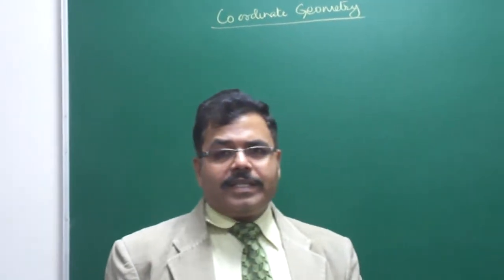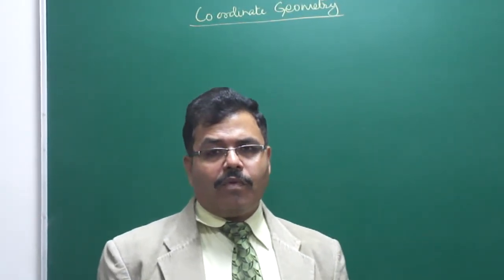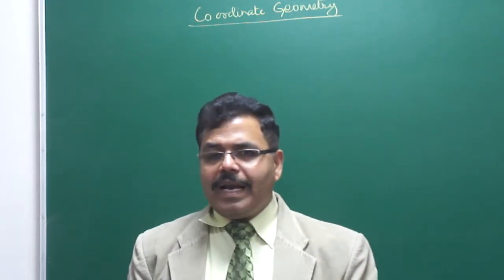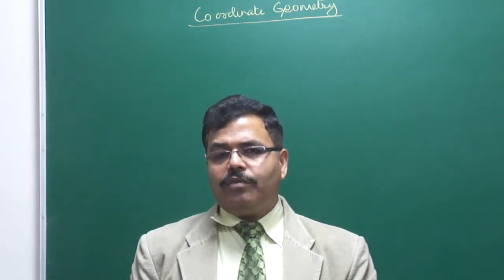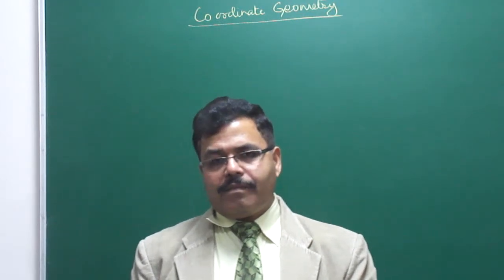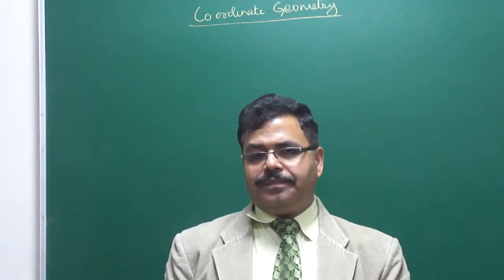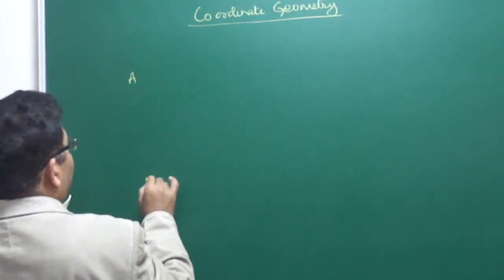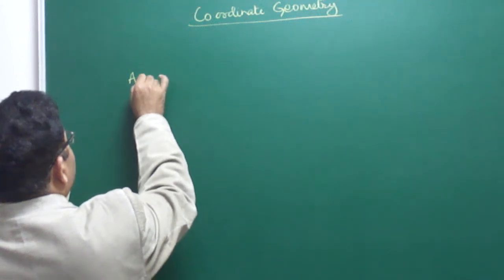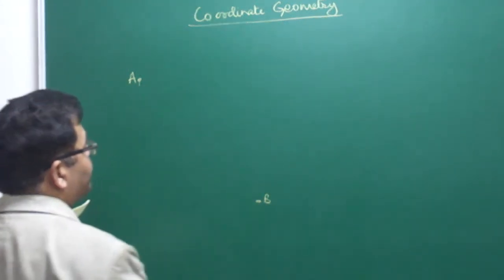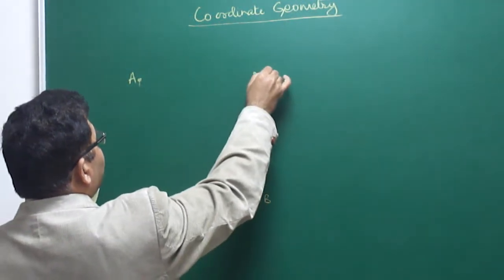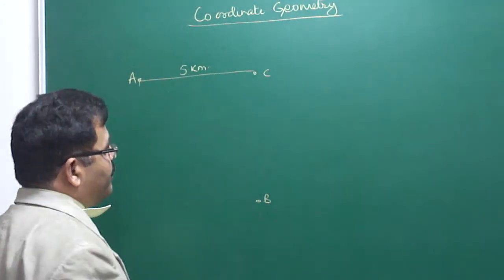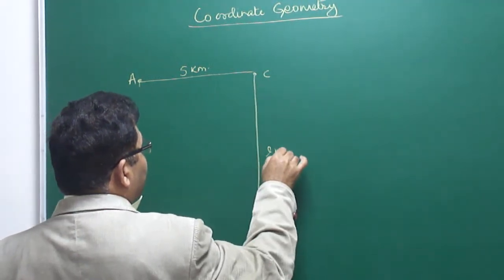First of all we would like to discuss about what is a Coordinate, and then we will discuss about geometry. To understand this, I am asking you one question. There are two cities — city A is here and city B is here. There is another city C which is 5 km from one place and 9 km from another place.